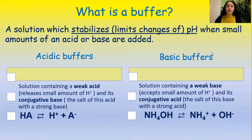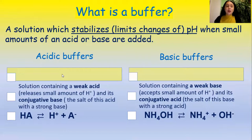So what is a buffer? According to the definition, a solution which stabilizes pH when small amounts of an acid or a base are added is called a buffer. There are two types of buffers: acidic buffers and basic buffers. An acidic buffer consists of a weak acid — a weak acid releases a small amount of hydrogen ions — and its conjugate base, which is the salt of this acid with a strong base.